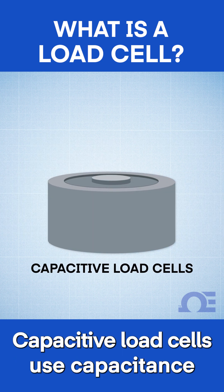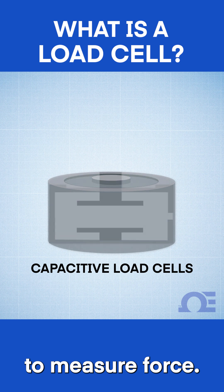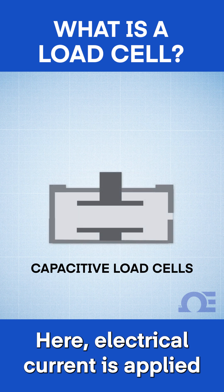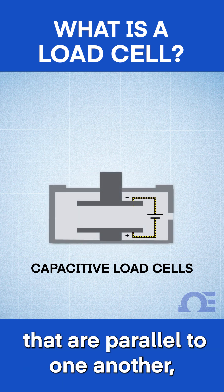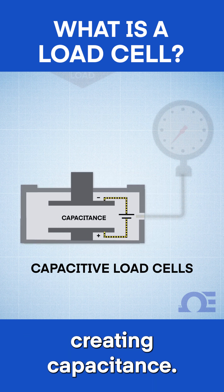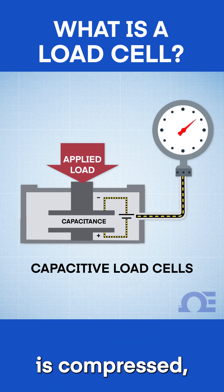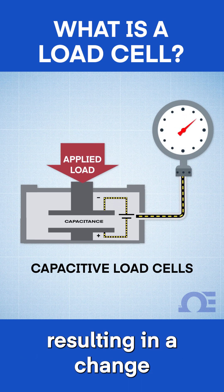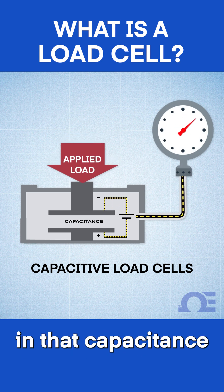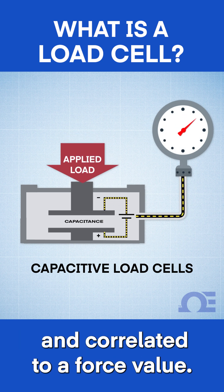Capacitive load cells use capacitance to measure force. Electrical current is applied to two flat plates that are parallel to one another, creating capacitance. When weight is applied, the gap between the plates is compressed, resulting in a change in that capacitance that can be measured and correlated to a force value.